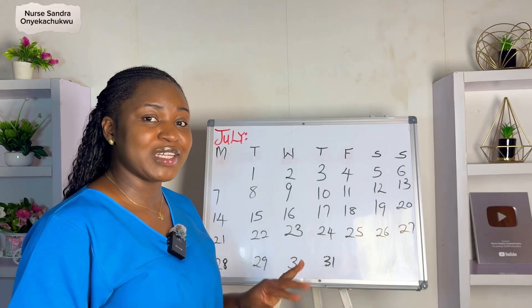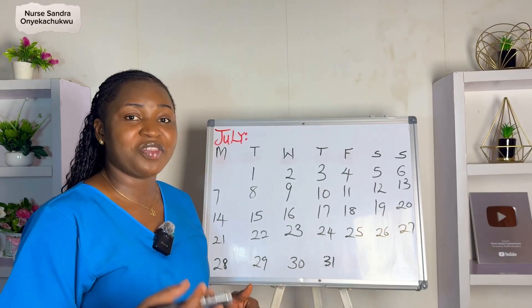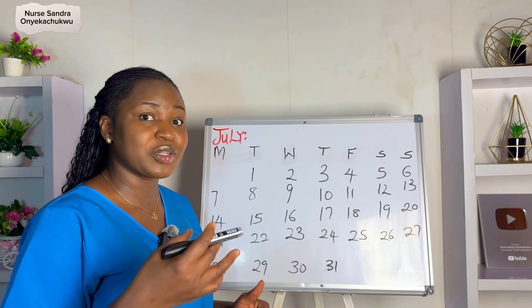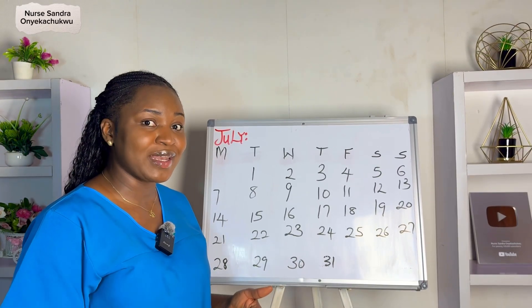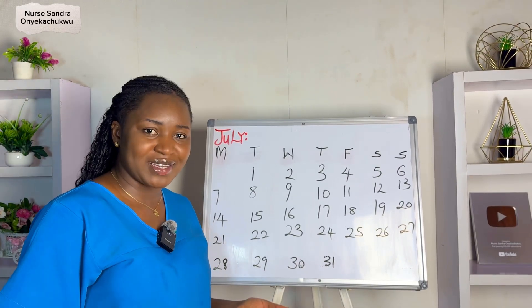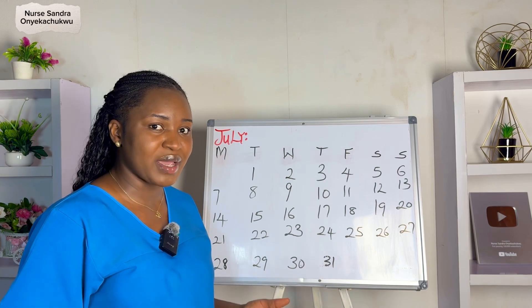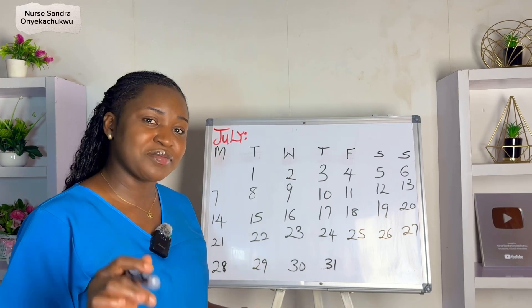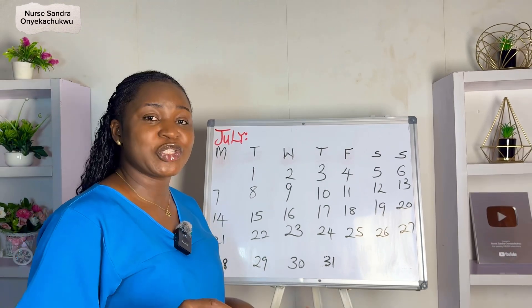What if I told you you've been calculating your cycle wrongly? Most women think that cycle length is 28 because everybody says so, and when their period shows up early or later they begin to panic. The thing is, the average cycle length for women is 28, but that doesn't mean every woman's cycle length has to be 28.